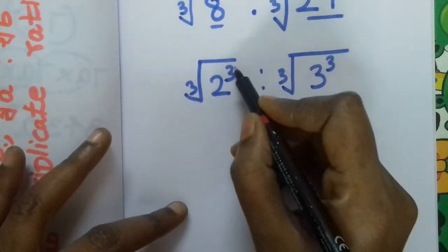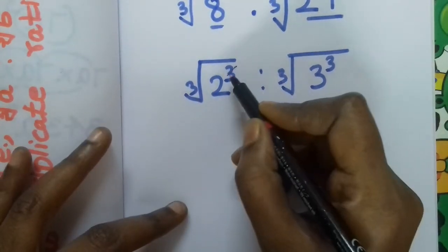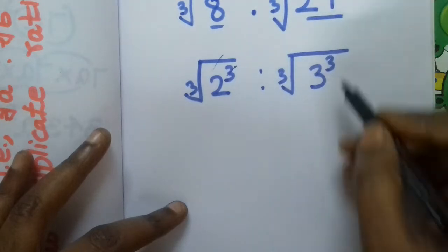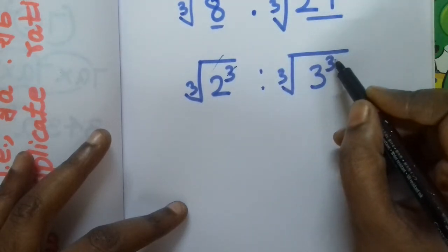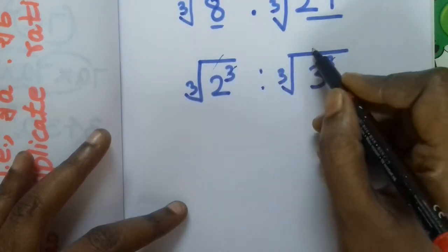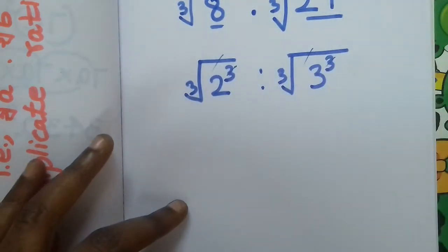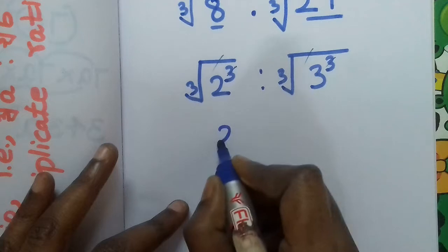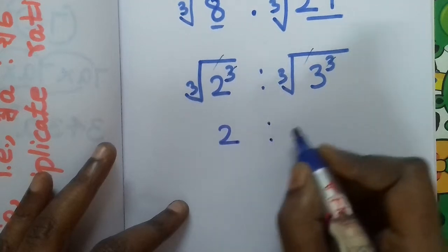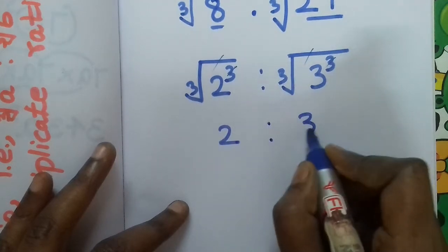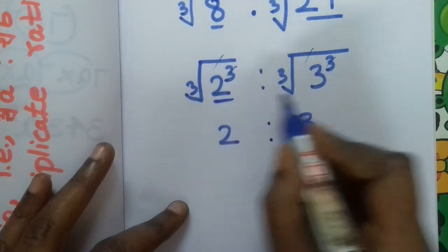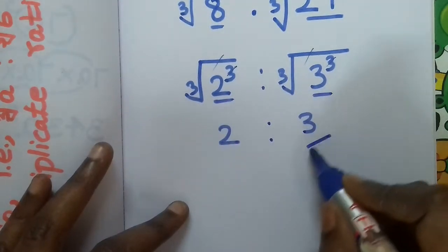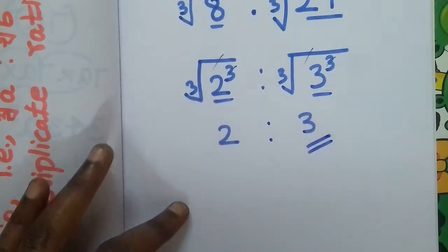So in the next step, inside the cube root, the cube cancels out. So the remaining answer is 2 is to 3. This is 2, and this is 3. So this is the answer.